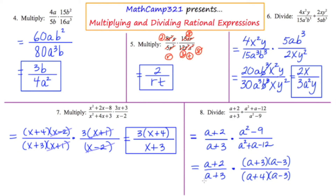The (a + 3) on the bottom left cancels with the (a + 3) on the upper right. And the (a − 3) on the upper right cancels with the (a − 3) on the lower right. So it seems like we're just left with (a + 2) over (a + 4).